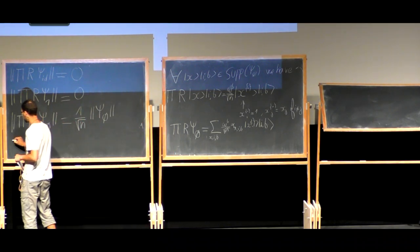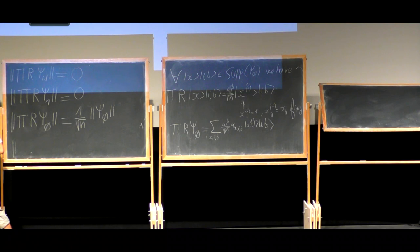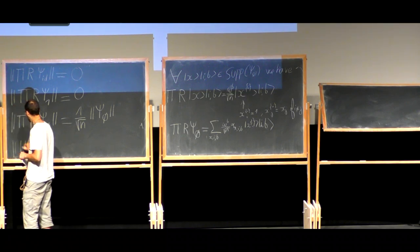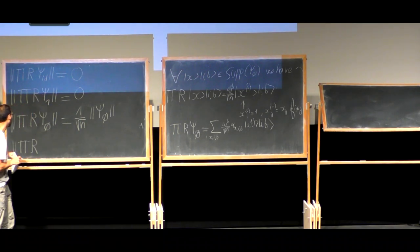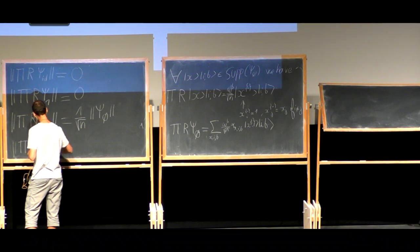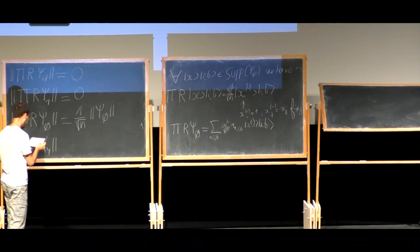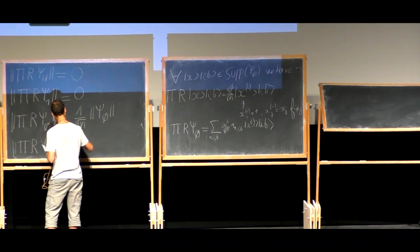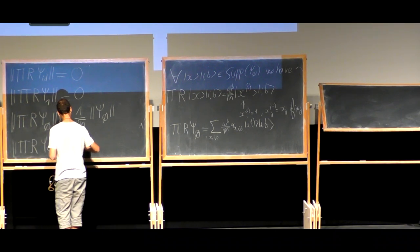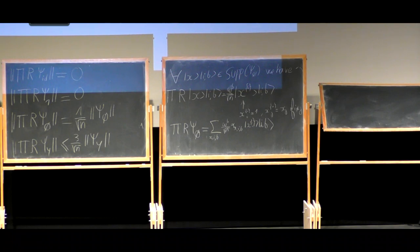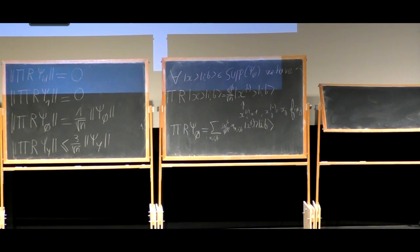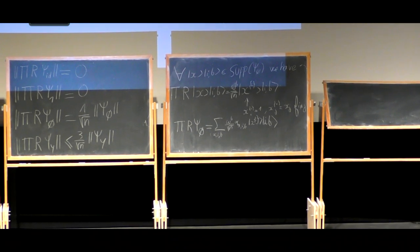Finally, the last case: for states psi_y when y is not equal to 1. Without doing the full computation — it is similar to what was done and uses the equation on the second line — what you will show is that this is at most 3 over square root n times the norm of psi_y. In the second case, we have a factor 3 because of the error term in blue that appears when applying a recording query.